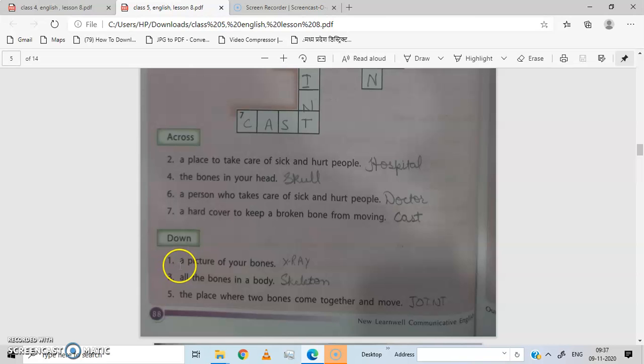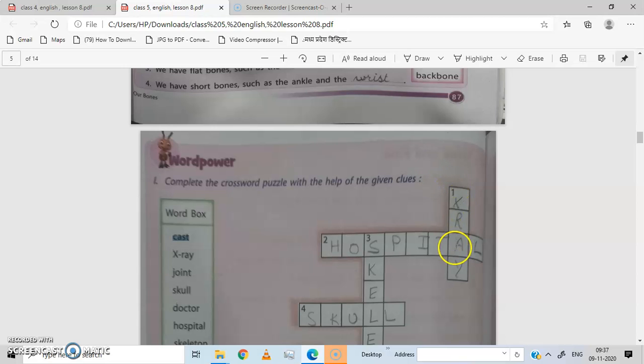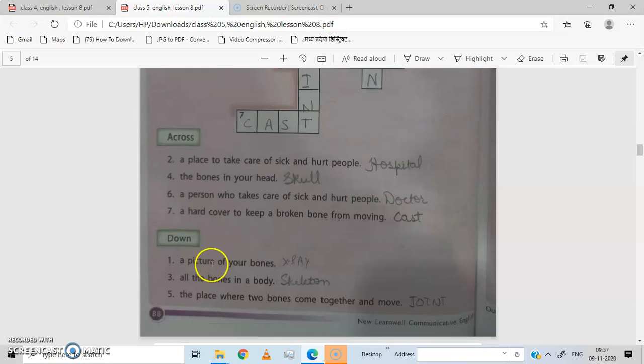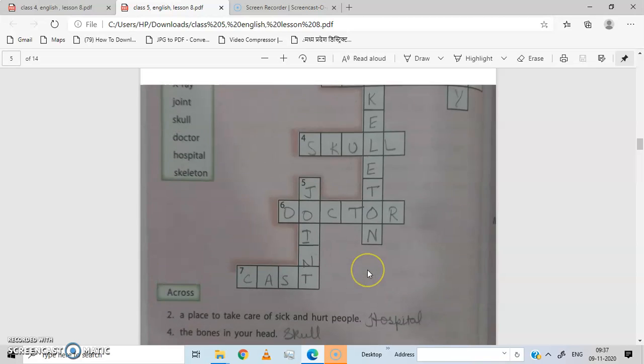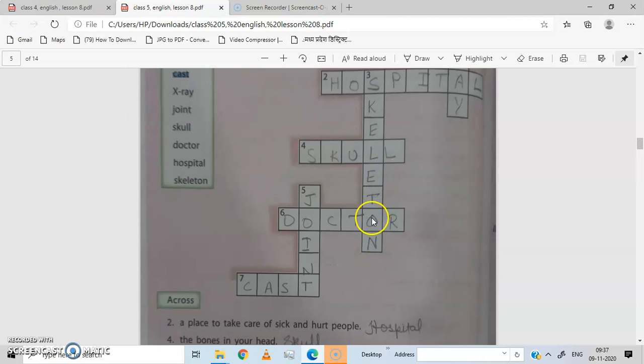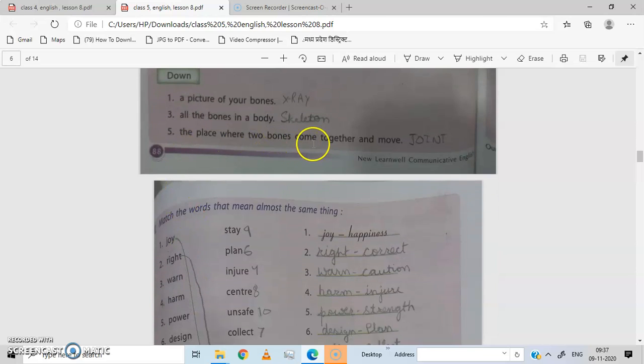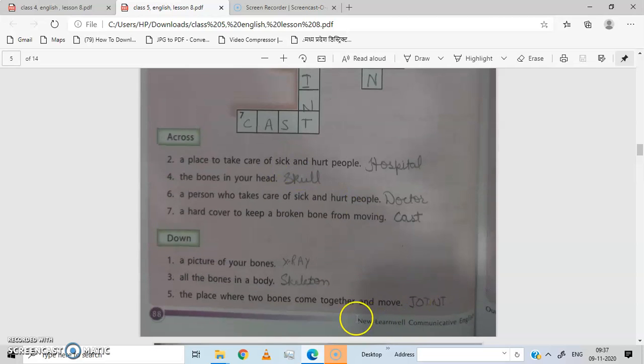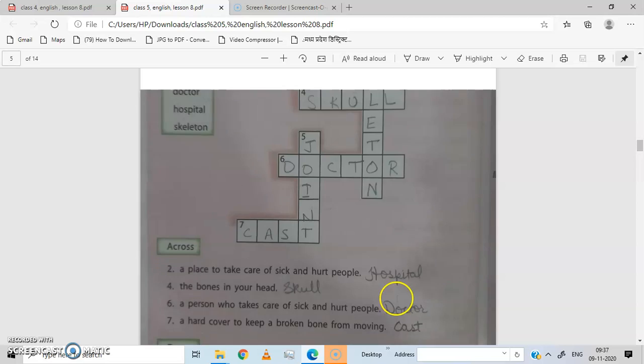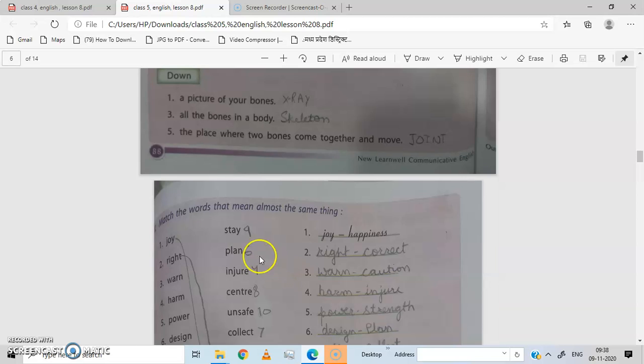Now down. First number, a picture of your bone, which is a picture of your bones, which is an x-ray. Next, all the bones in the body. When all the bones are found in the body, then what is number 3? The number 3 is the skeleton. The place where two bones come together and move, that is called joint, number 5. Let's move on to the next exercise.